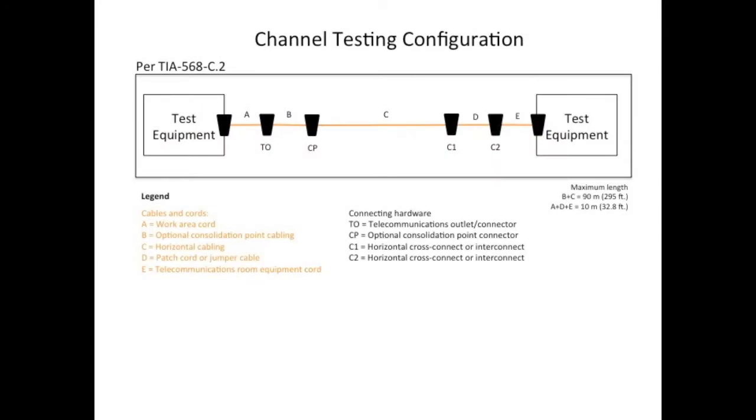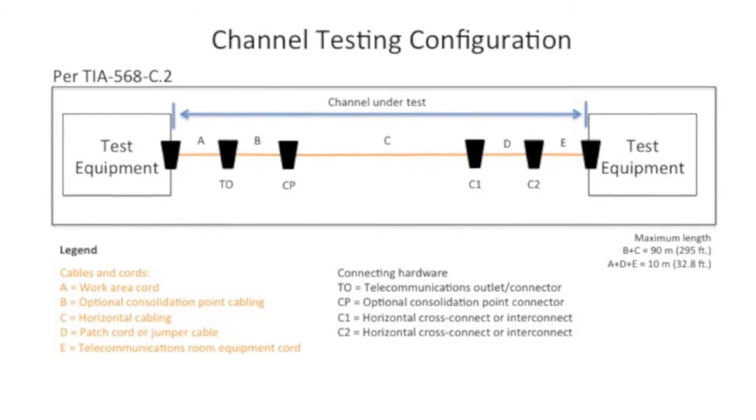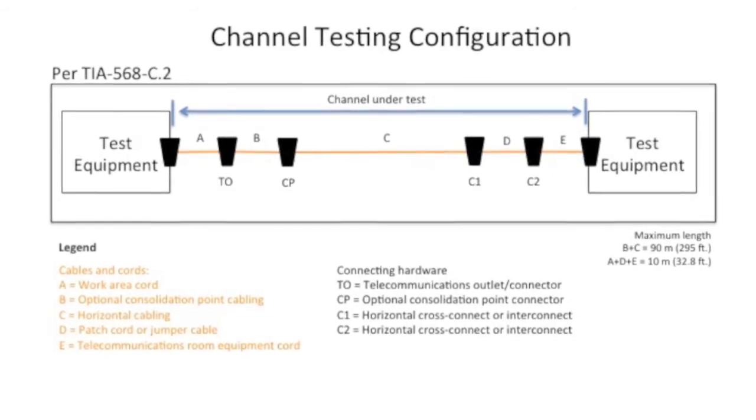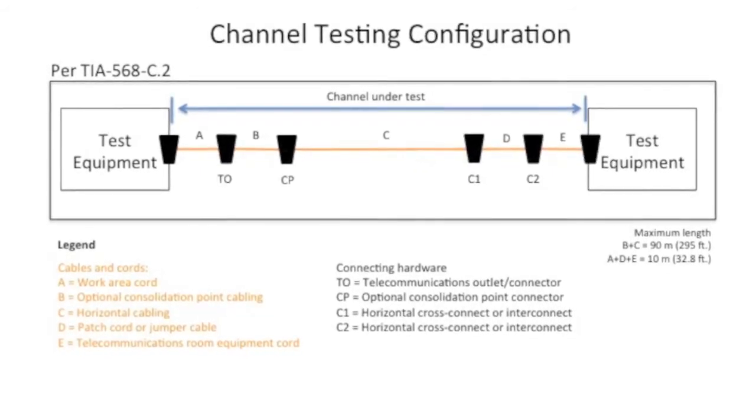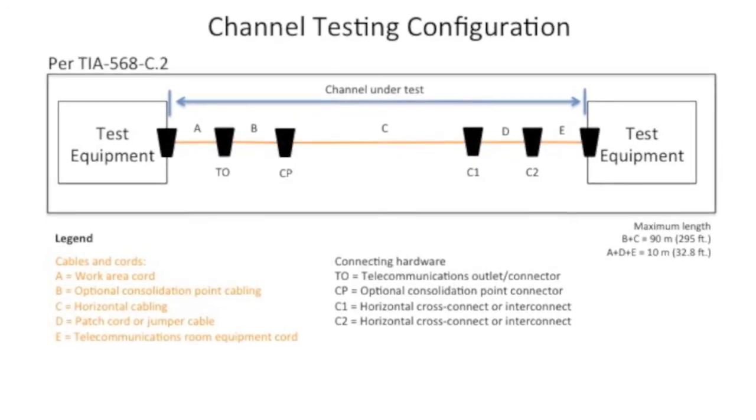The channel is comprised of the horizontal cabling, connecting hardware, and patch cords, and utilizes a channel adapter at each end of the channel under test. It is important to note that the plug connected directly to the channel adapters is not part of the channel under test, and therefore the field tester manufacturers must exclude those plugs from the reported measurement results.